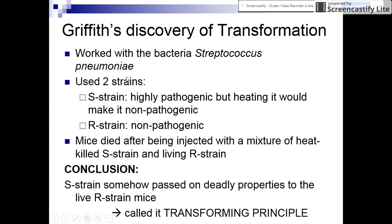He worked with bacteria that causes pneumonia, using two strains. The S strain is highly pathogenic — pathogenic means it can cause disease and kill — but if he heated it, it became non-pathogenic. The R strain is always non-pathogenic. What he noticed is that when he injected a mixture of the two types of bacteria into a mouse, the mouse died. He concluded that the S strain somehow passes on its deadly properties to the R strain, and he called that the transforming principle.